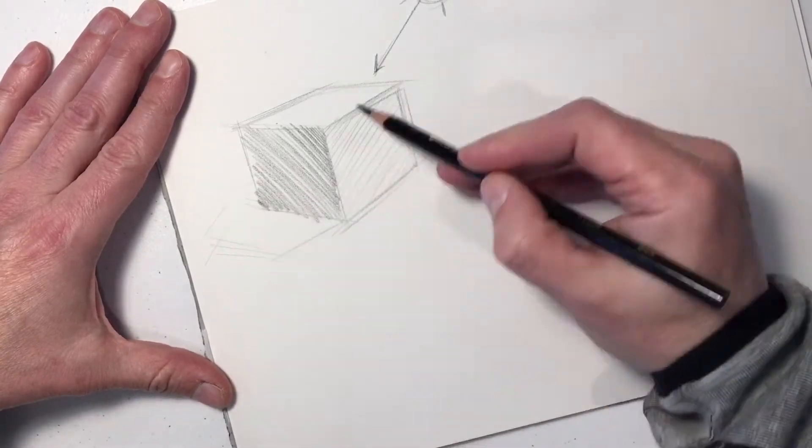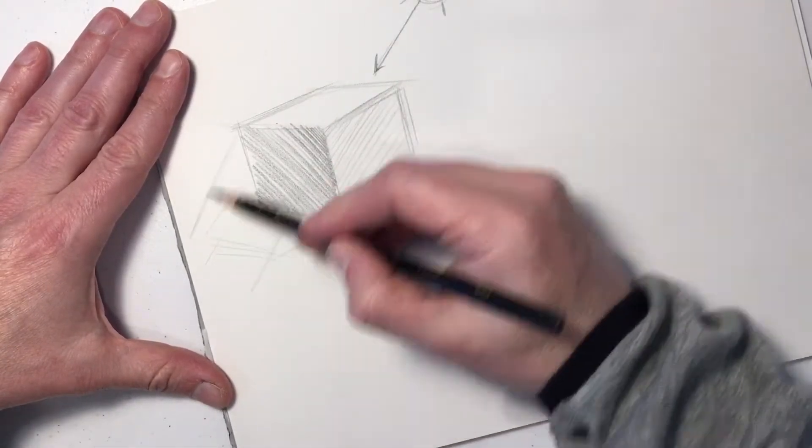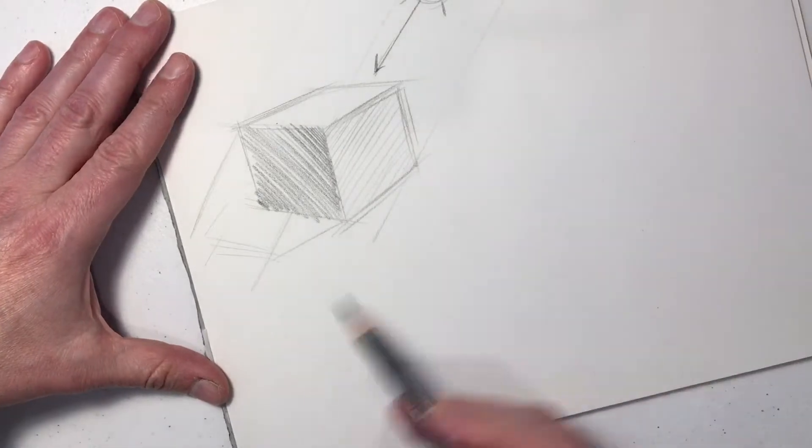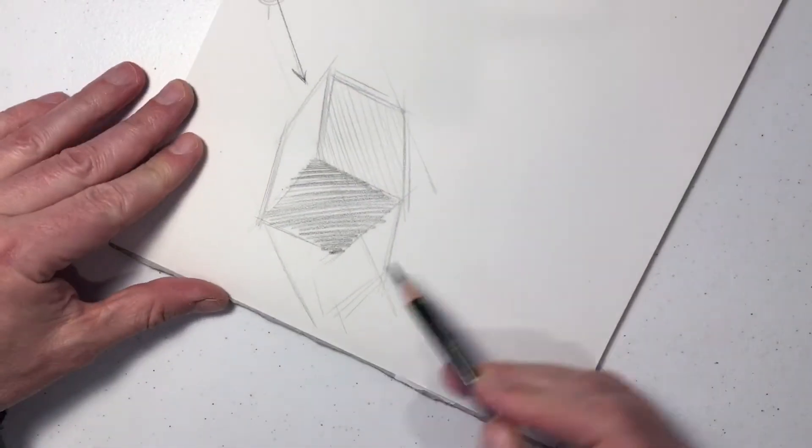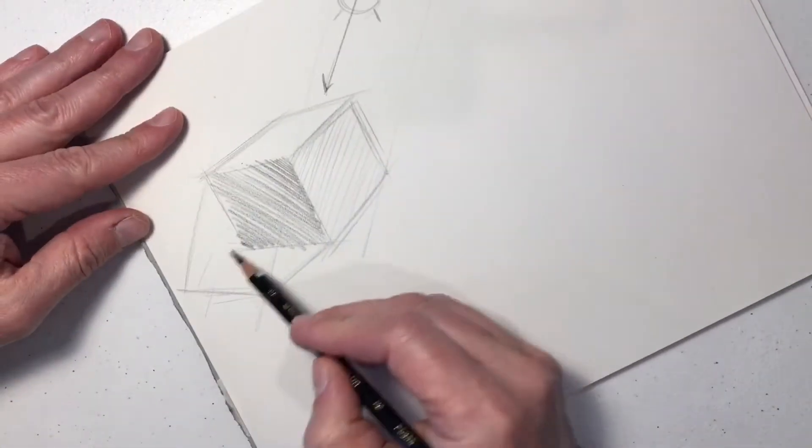We'll also use the directional light to establish the direction of our shadow. You can see I'm drawing parallel lines to the sun in order to lay out the shadow.